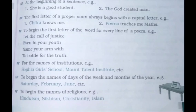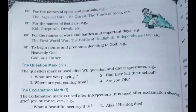To begin the names of religions — like Hinduism, Sikhism, Islam, Christianity — all these will begin with a capital letter. For the name of epics and journals, for the name of books like The Holy Quran, The Bhagavad Gita — these will begin with capital letters.